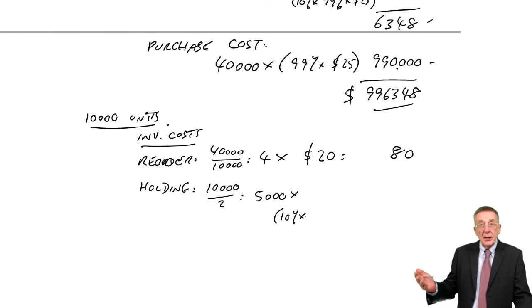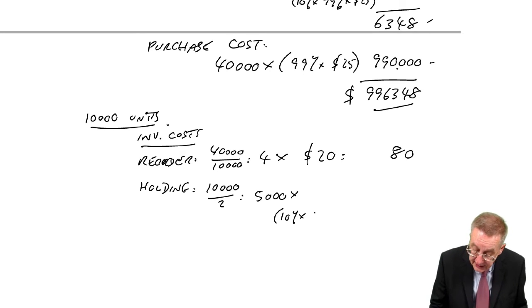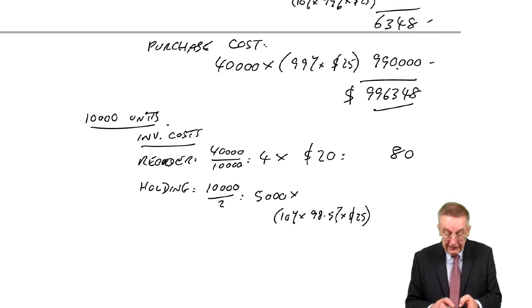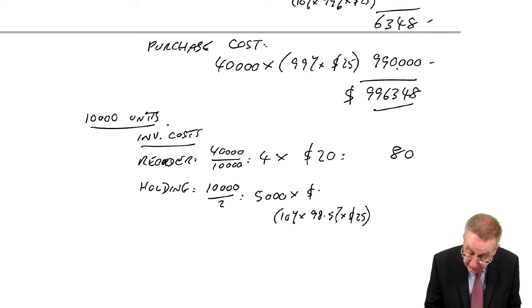Which means the cost will only be 98.5% of the $25. So the holding cost per unit, 98.5% of 25, 10%, I get $2.4625.